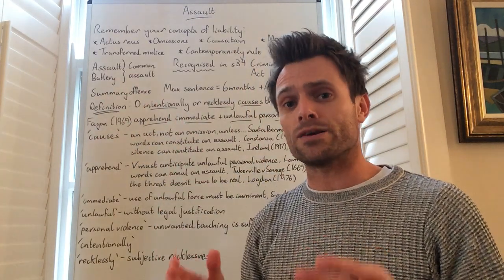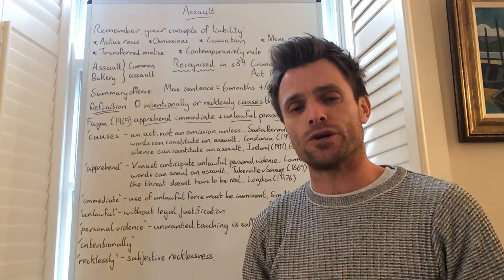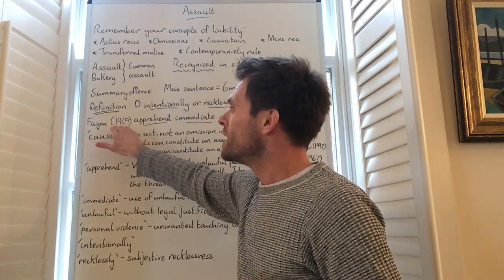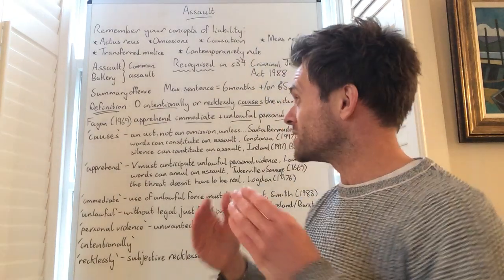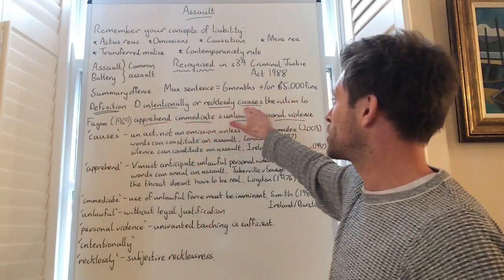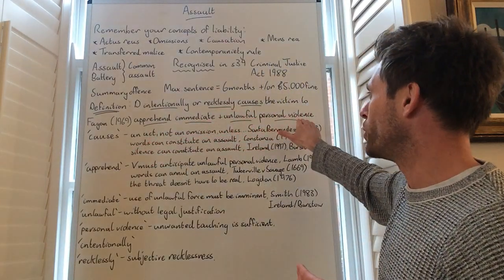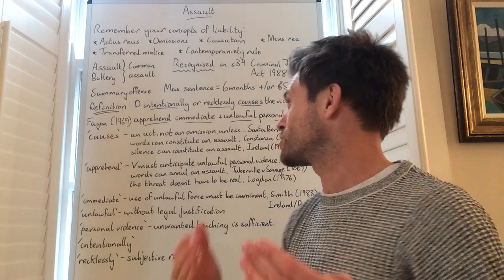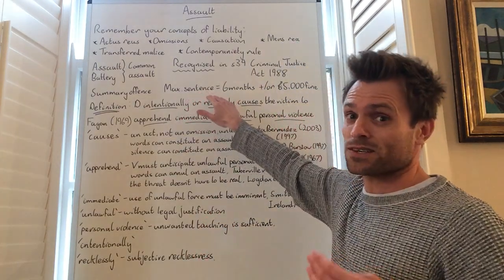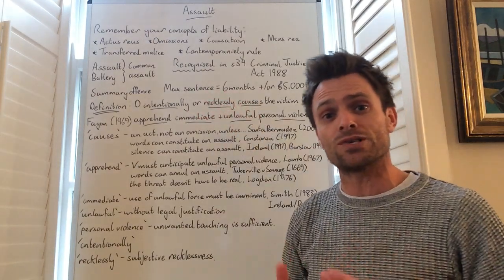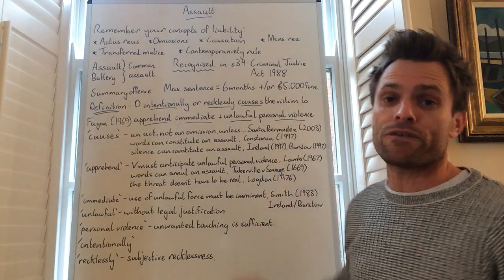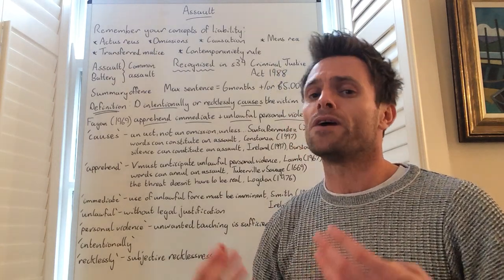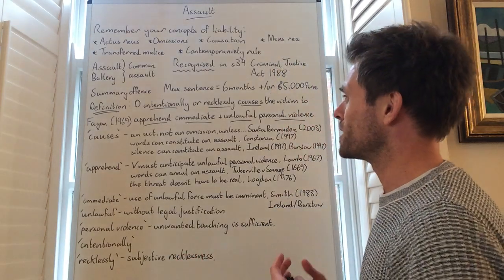You'll all remember the case of Fagan - that is where the Irish defendant drove upon the police officer's foot and refused to move it at the police officer's request. We saw that case when we looked at the contemporaneity rule, but it also gave the definition of what an assault is. The definition itself: the defendant intentionally or recklessly causes the victim to apprehend immediate and unlawful personal violence. It is a summary offence - not particularly serious - and that means it will be heard in the magistrate's court. The maximum sentence is six months in prison or a £5,000 fine.